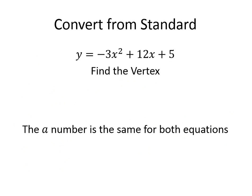Converting from standard form. So if you're in standard form and you want to go into vertex form, what you have to do is find the vertex of this. So you'll use your negative B, negative 12, all over 2 times negative 3, which would be negative 12 over negative 6, which would be 2.